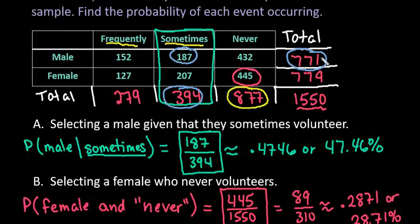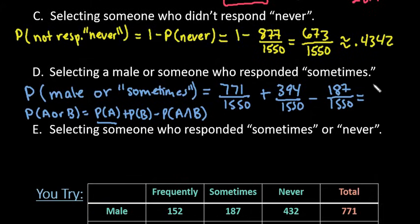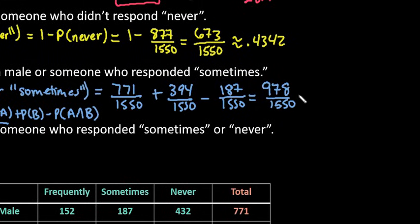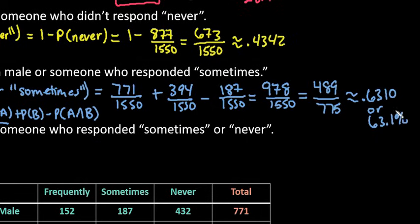Then we would just simplify this. So we would do 771 plus 394 minus 187. You could also use the total males plus the females that responded sometimes. If you do this, it might be a little bit easier because that would give you 978. So this answer is 978 over 1550. This does simplify down to 489 over 775, or you could write it as 0.6310 or 63.1%. All of those are acceptable formats.